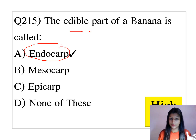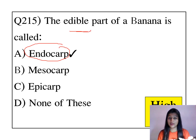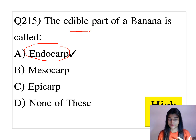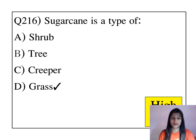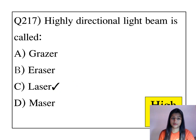The edible part of a banana is called the endocarp. The edible part is the part that you can consume — the part you can eat. Sugar cane is a type of grass.